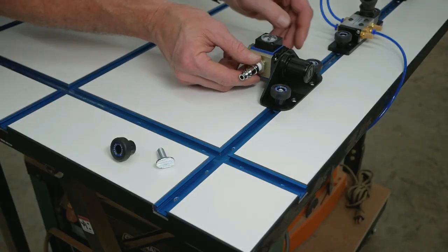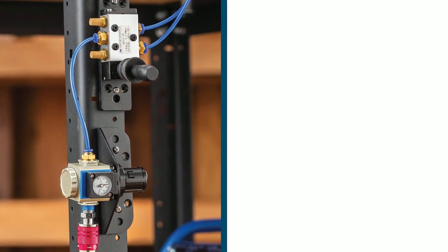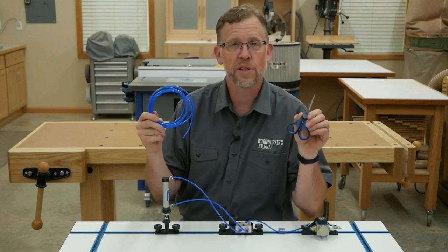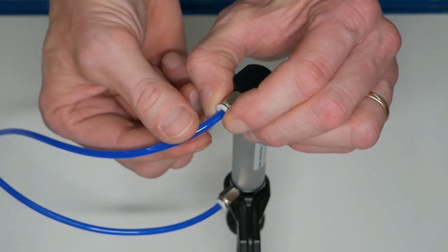Rockler makes ordering easy with your choice of two all-in-one starter kits that include all the components you need for either a vertical or horizontal clamp. You can then easily add additional clamps by purchasing vertical or horizontal expansion kits.